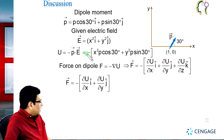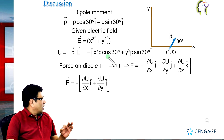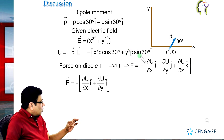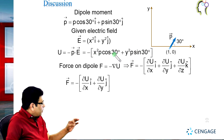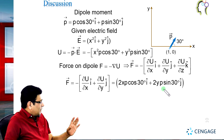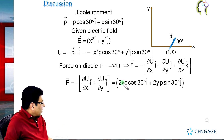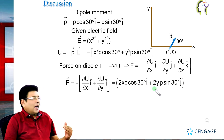We need to compute the partial derivatives. For del-U/del-x, we treat y as a constant, so the y-squared term gives zero, and we get 2x multiplied by p cos 30. For del-U/del-y, treating x as a constant, we get 2y multiplied by p sin 30. The electric field has no z-component, so we need not consider k-cap.